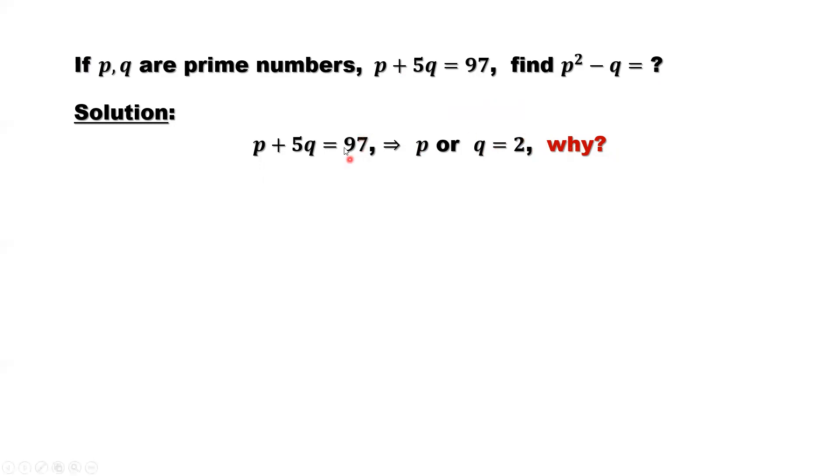Look at the right-hand side, which is 97. 97 is an odd number. 5 here is an odd number. So p and q cannot be odd or even at the same time. If both are even, this number should be even.